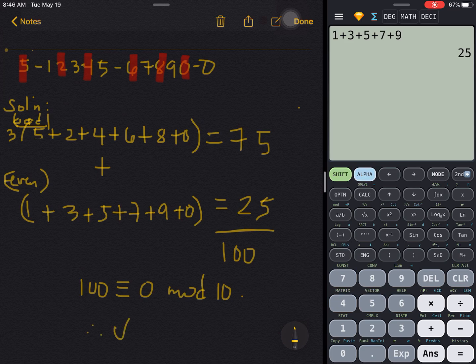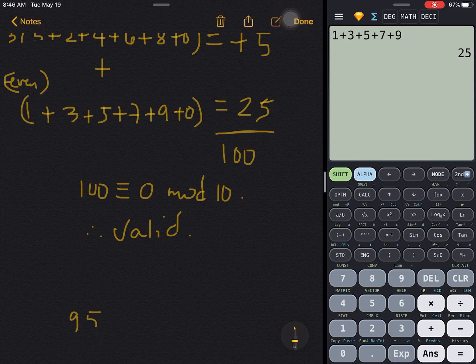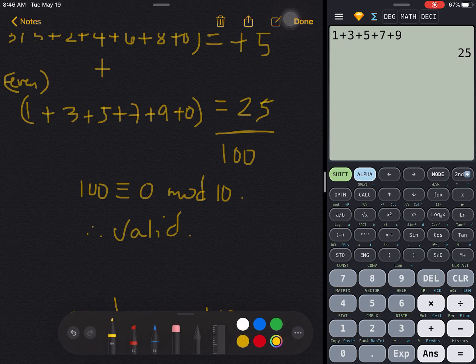Therefore, the code or the UPC is valid. Easy. That's how you check UPC. So in the event that the sum, say 95, is not divisible by 10, automatically just have to cross it out and say 95 is not congruent to 0 mod 10, therefore the code is invalid.